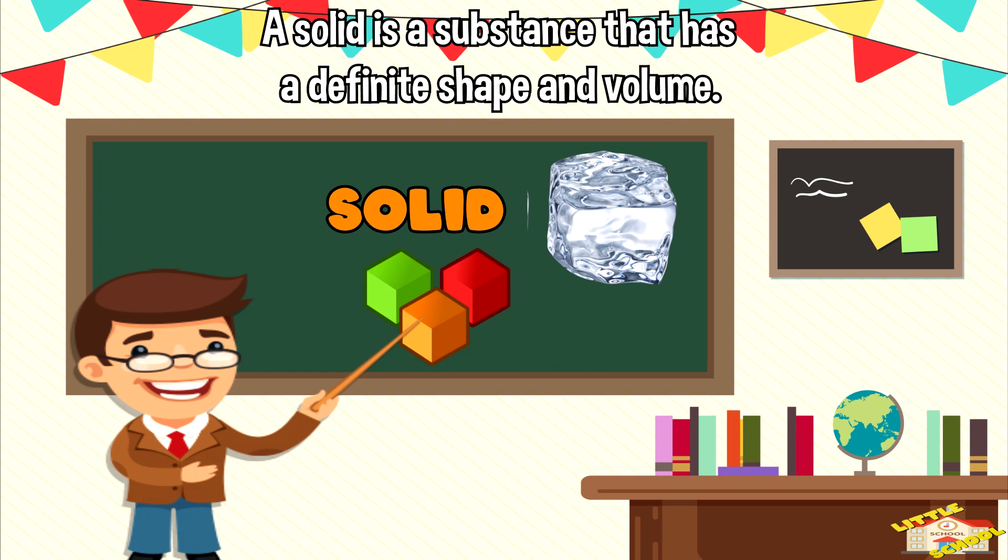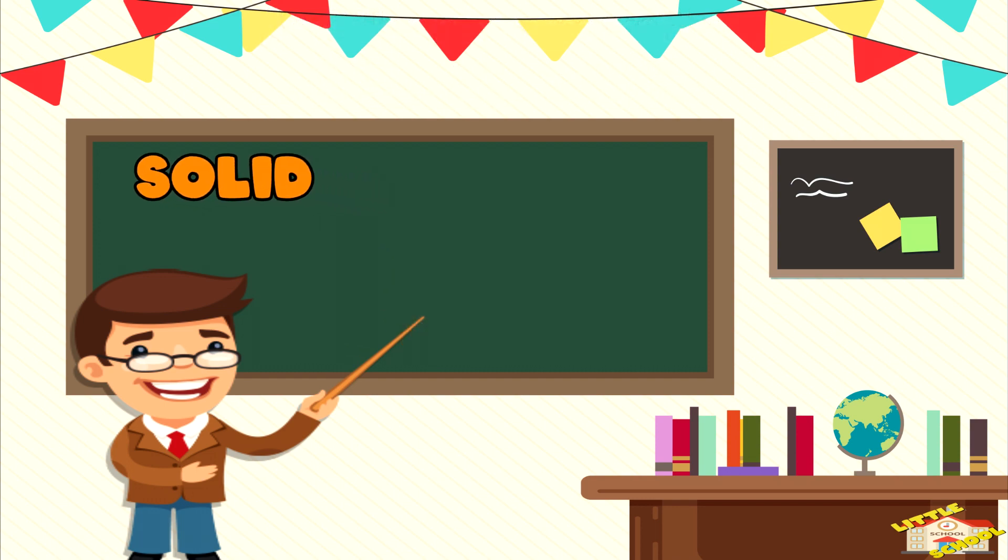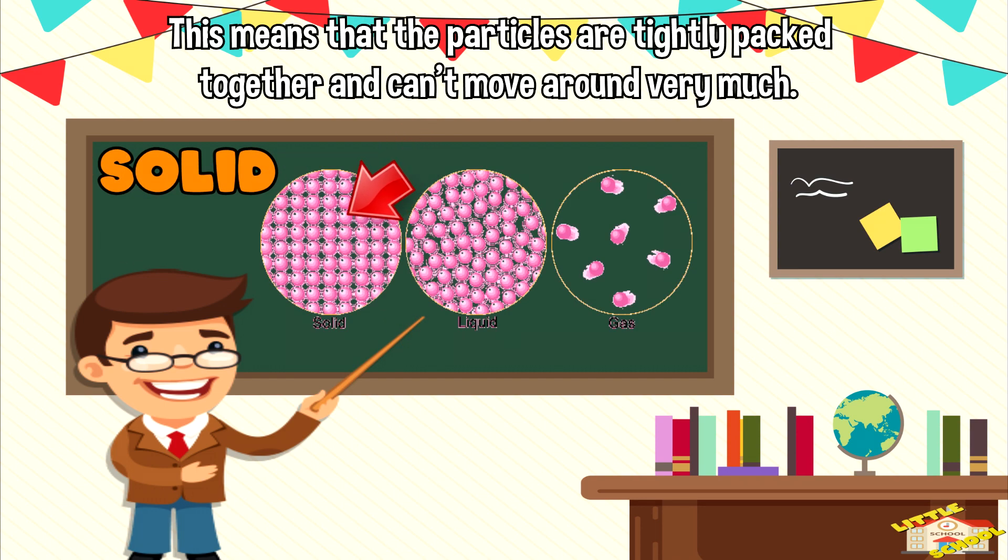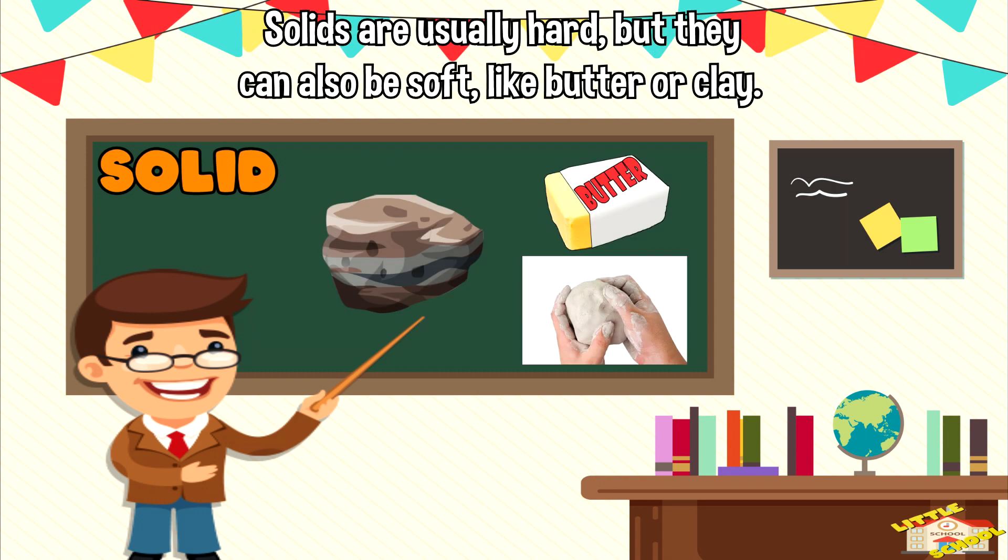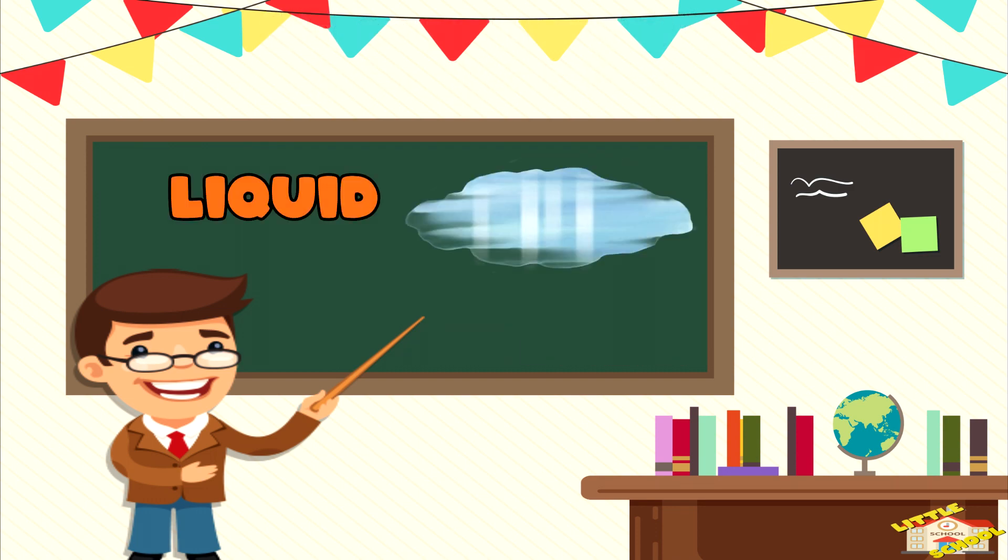A solid is a substance that has a definite shape and volume. This means that the particles are tightly packed together and can't move around very much. Solids are usually hard, but they can also be soft like butter or clay.